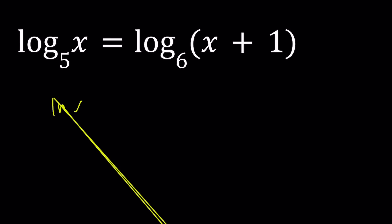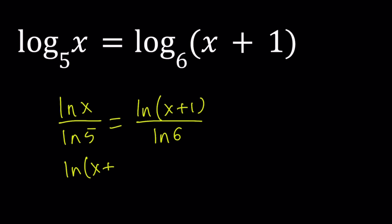So let's use ln on both sides. And let's go ahead and write this as ln x over ln 5 and write this as ln x plus 1 over ln 6. So from here, what am I getting? Well, we're getting ln x and ln x plus 1. We can put them on the same side like ln x plus 1 over ln x equals ln 6 over ln 5.